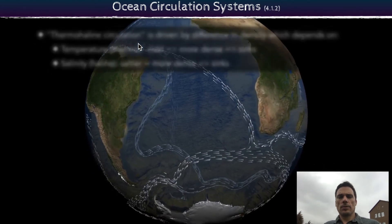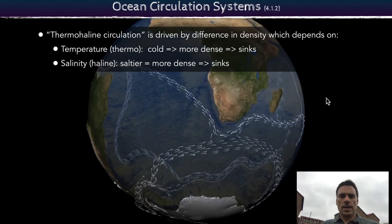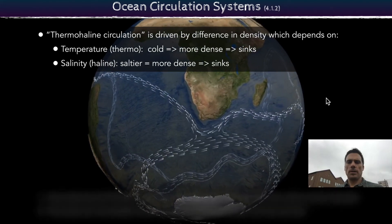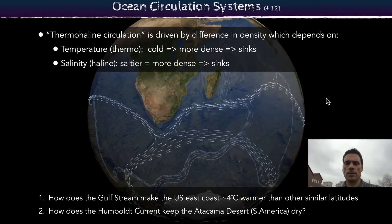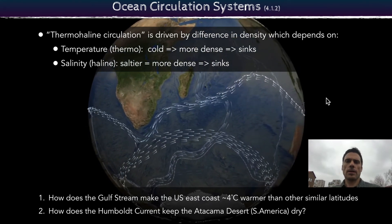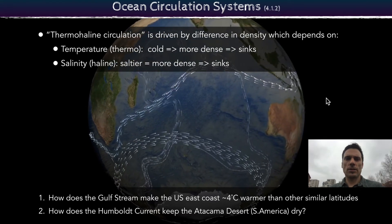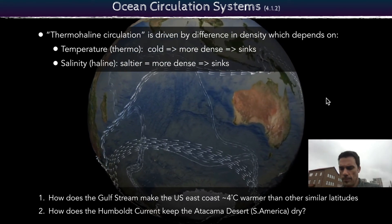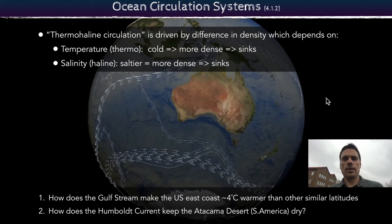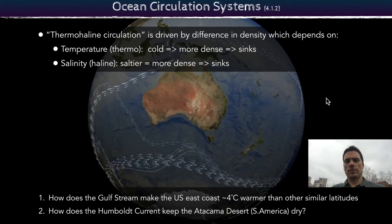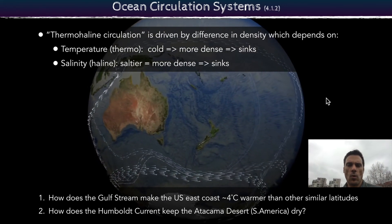Here are a couple of notes to summarize that information. Something to consider: a couple of questions dealing with thermohaline circulation and ocean circulation. If you look at the Gulf Stream, it's much warmer along the east coast of the US than it is in Europe where that stream curves across and drops down into England and France — and why is it warmer?